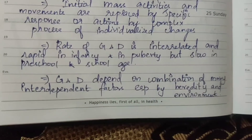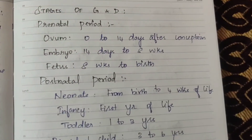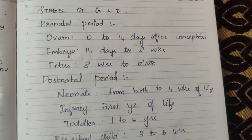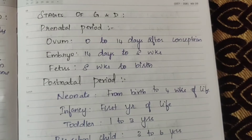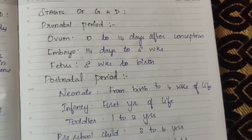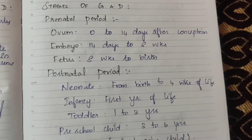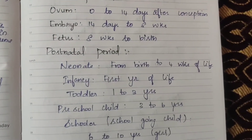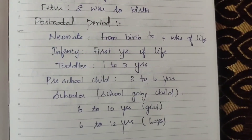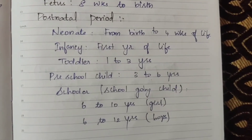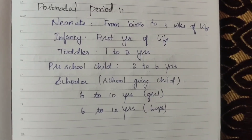Areas and stages of growth and development. Prenatal stage: Ovum is 0 to 14 days after conception; Embryo is 14 days to 8 weeks; Fetus is 8 weeks to birth. Postnatal stage: Neonate is from birth to 4 weeks of life; Infancy is the first year of life, from 1 month to 12 months.